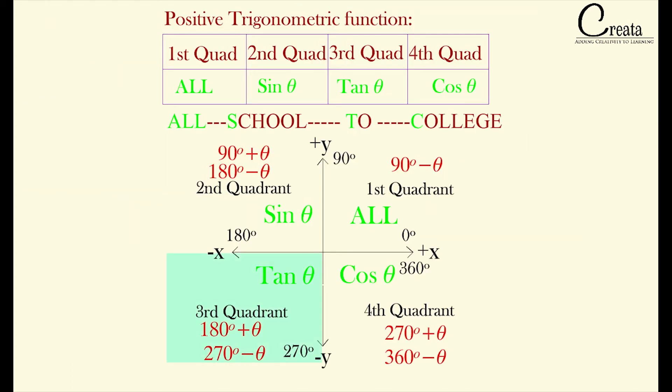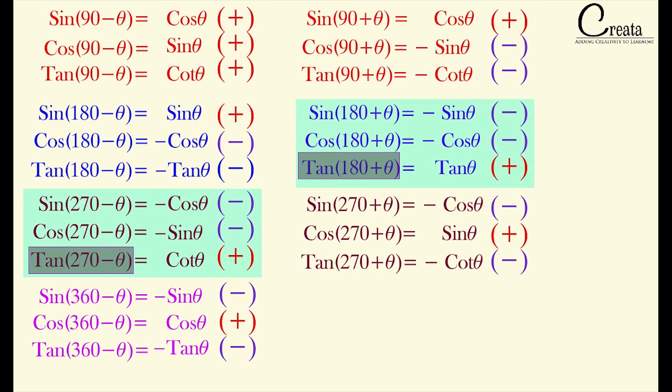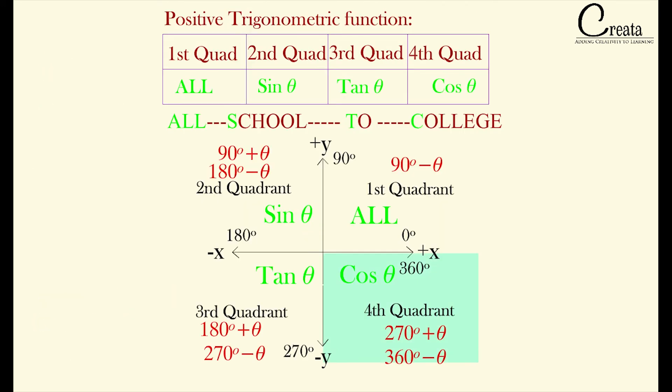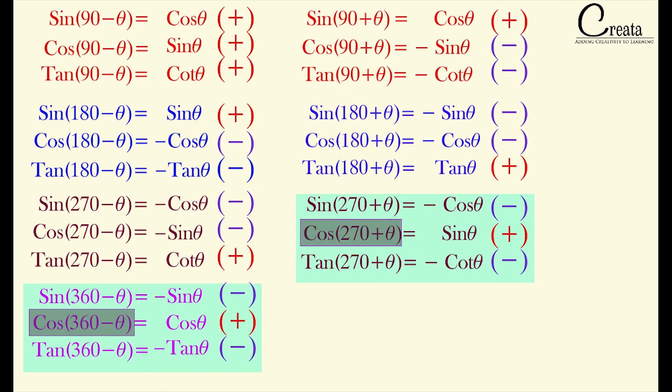In third quadrant, 180 plus theta and 270 minus theta, only tan is positive. In fourth quadrant, that is 270 plus theta and 360 minus theta, only cos is positive. So by combining our both tricks, we do not have to remember the formula.